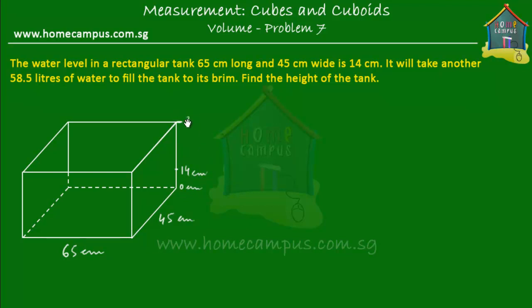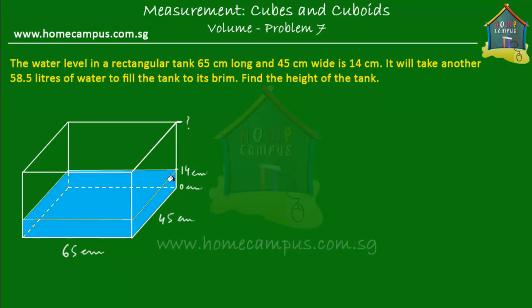We have to find out what the total height of the tank is. There is already water in the tank up to 14 cm of height. If we pour another 58.5 liters of water into the tank, then the tank will be filled to the brim, which means it will be filled to its maximum capacity. The tank is already filled till 14 cm, and if we pour another 58.5 liters of water, then it will be filled to the top.